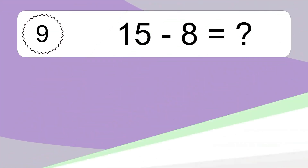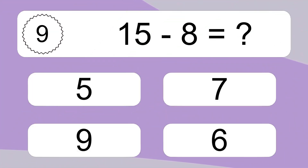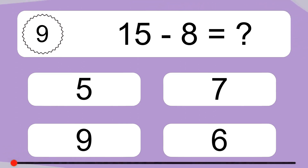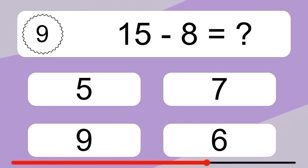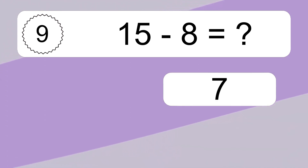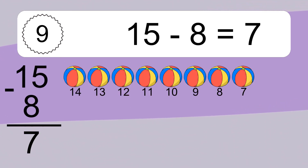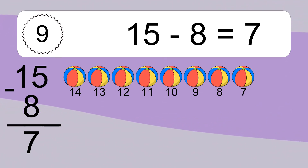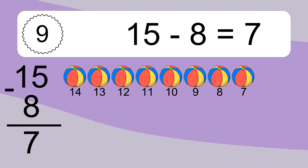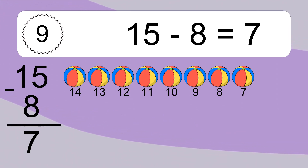15 minus 8 equals what? 15 minus 8 equals 7. Let's count it: 14, 13, 12, 11, 10, 9, 8, 7.